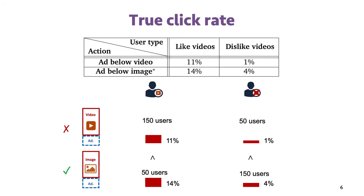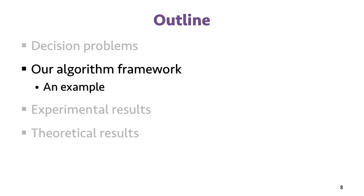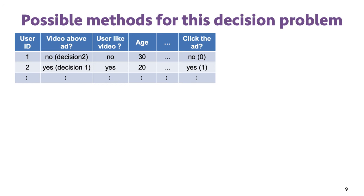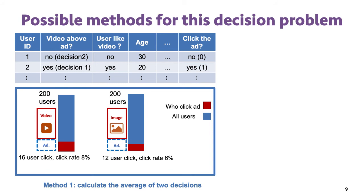We also list the number of users in the log data in each subgroup. Now, we present our algorithm framework with the example. A naive method would be to calculate the average click rate for the two decisions. After calculation, we find that the average click rate is higher if we place ads below videos. So we decide to place ads below videos. But because we know the ground truth, we see that we choose the worst action using this method.